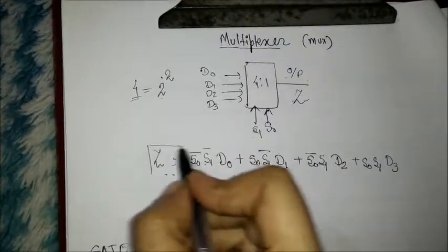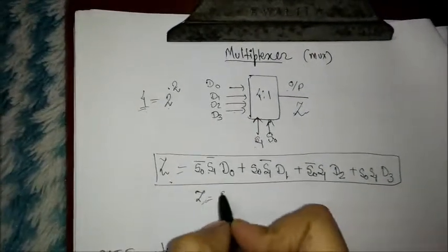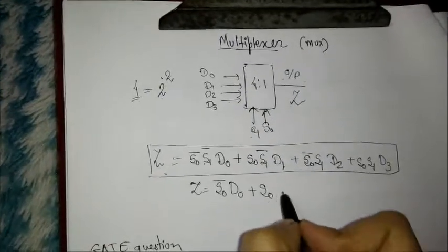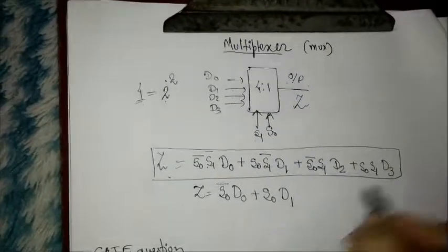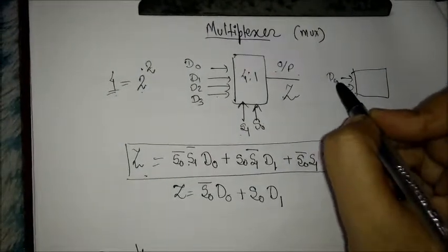What we have to remember about MUX is this characteristic equation. We can similarly write down the characteristic equation for a 2-to-1 MUX. In a 2-to-1 MUX, there will be 2 input lines, D0 and D1.